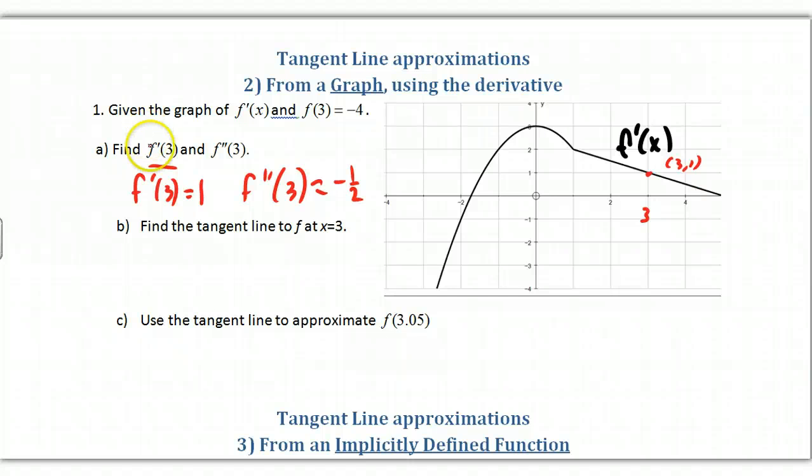Then the next part, part B, find the tangent line to F at X equal to 3. What do we need? We need the point and we need the slope. I need the point from F and I need the slope, which is F prime of 3. Now I'm looking for the point. What point am I going to use? I got so many flying around here. There it is.